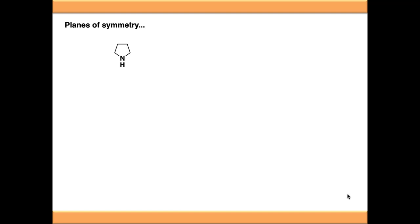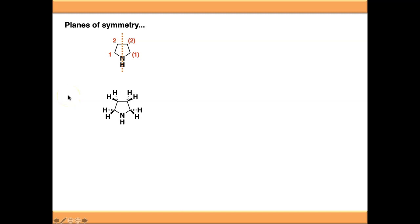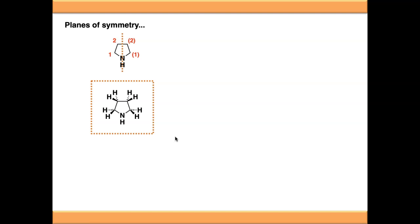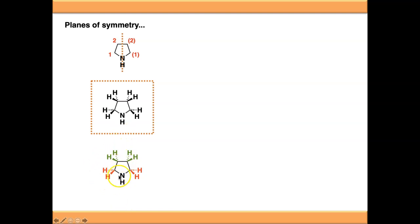Starting with pyrrolidine itself, we number the chemical environments as the protons adjacent to nitrogen and those that aren't. There is a plane of symmetry straight through the middle of the molecule, so everything on one side is reflected on the other. Drawing all protons in 3D, there is also a plane of symmetry in the plane of the screen — protons on wedge bonds coming towards you are reflected by those on hash bonds going away. This means the two protons on position 1 are chemically equivalent, as are the two on position 2. There is no diastereotopism in pyrrolidine.